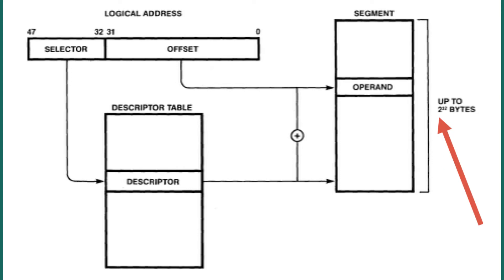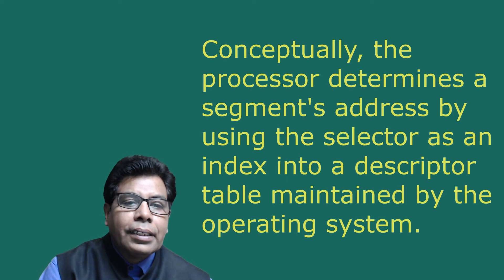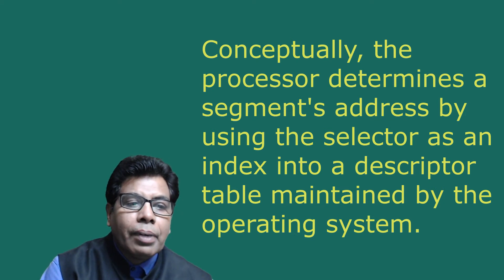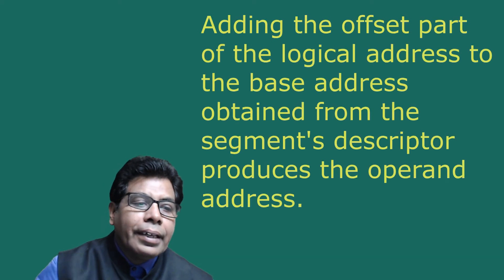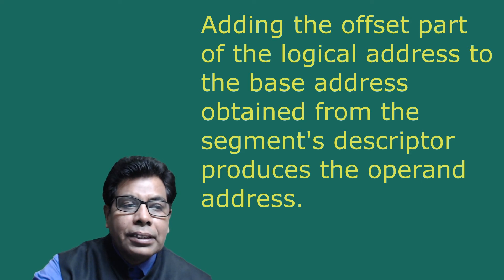As you can see, the address space can go up to 2 raised to 32 bytes, so the size of the segment will be 4 gigabytes. To summarize: the selector part of the logical address names a segment's descriptor; the processor determines the segment's address by using the selector as an index into a descriptor table maintained by the operating system; and adding the offset part of the logical address to the base address obtained from the segment descriptor produces the operand address.